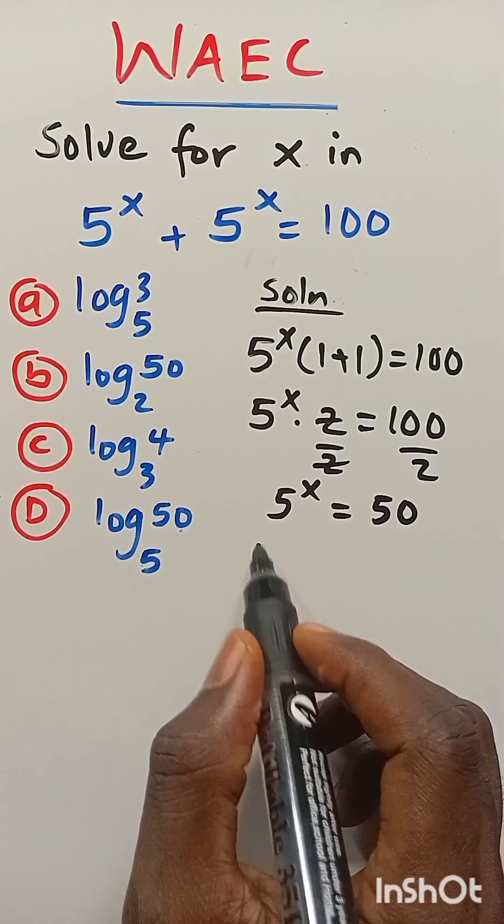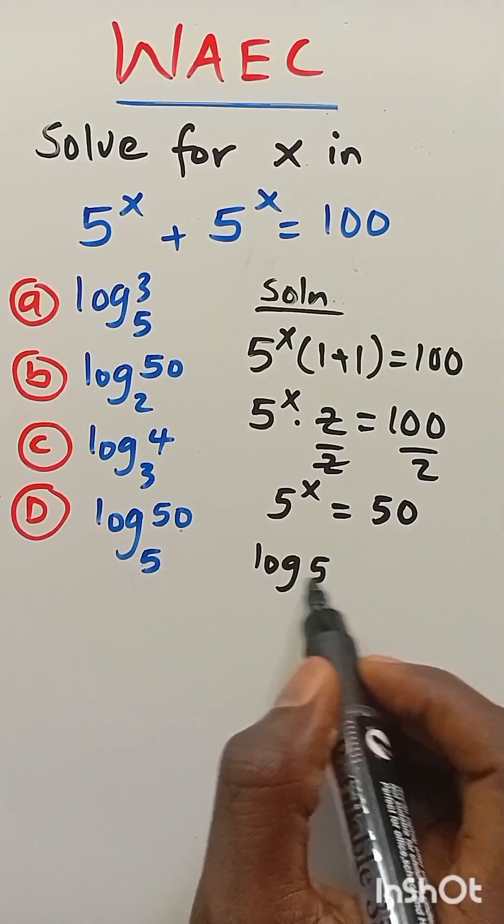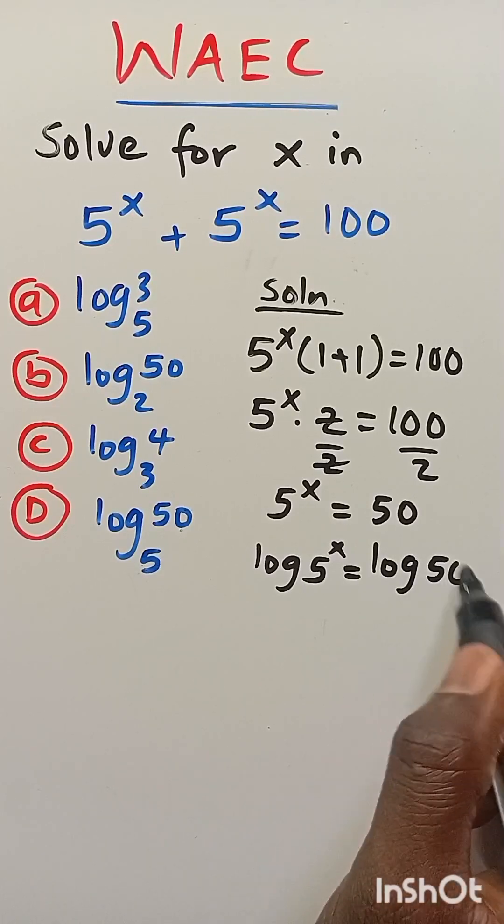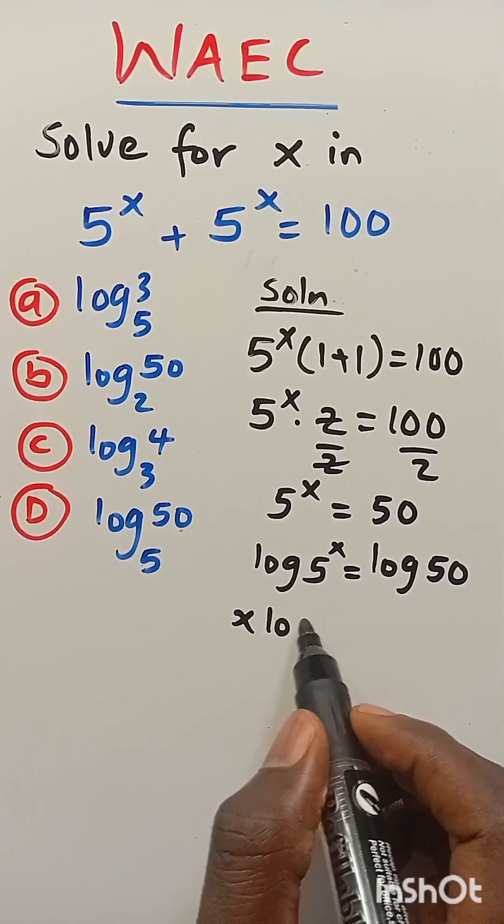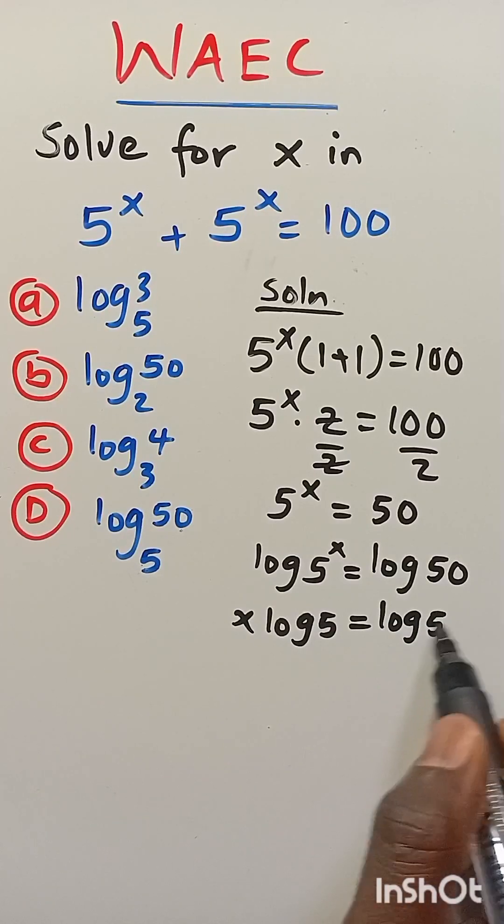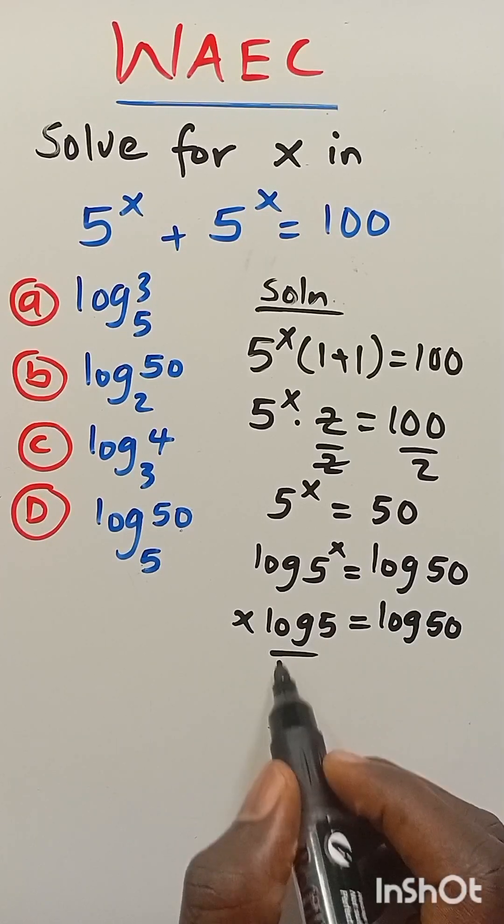When we introduce log, we have log 5 to the power of x equals log 50. So this will be x multiplied by log 5 equals log 50. When we divide both sides by log 5,